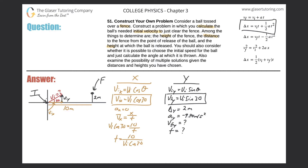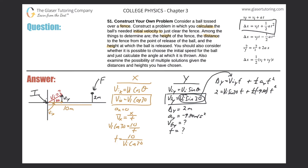The equation is: change in y equals initial velocity in the y direction multiplied by time, plus one half of the acceleration in the y dimension times time squared. Delta y is two, the initial velocity in y is initial velocity times sine of 30 — substituting that in — multiplied by time, plus one half times negative 9.80 times t squared.